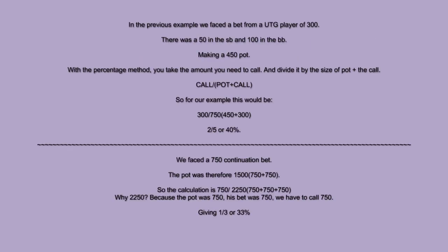In the previous example, we faced a bet from an under the gun player of 300. There was 50 in the small blind and 100 in the big blind making a pot of 450. With the percentage method, you take the amount you need to call and divide it by the size of the pot plus the call. So this would be 300 divided by 750, because there was 450 in the pot plus the call we have to make. This would give you 2 over 5, or 40%. This percentage is very useful in poker as it is what you can use to become either a winning or a losing player. I will show you how to use this in a later video.